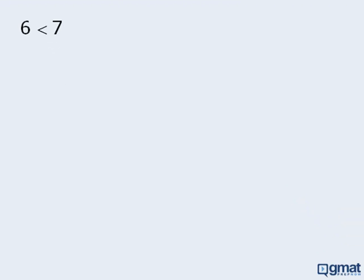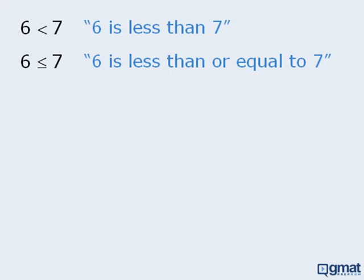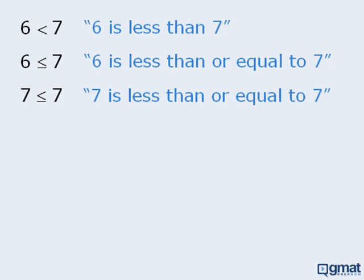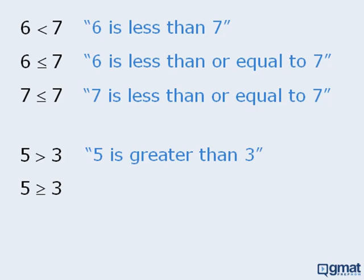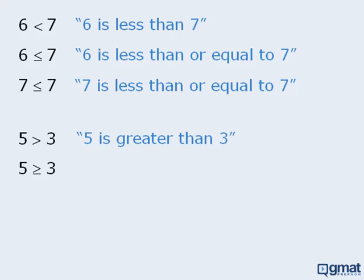The inequality shown here can be read as 6 is less than 7. Another symbol you should be familiar with is the symbol for less than or equal to. So this example can be read as 6 is less than or equal to 7. We can also say that 7 is less than or equal to 7. We can also express inequalities with the greater-than symbol — this is read as 5 is greater than 3. This symbol denotes greater than or equal to, as in 5 is greater than or equal to 3.